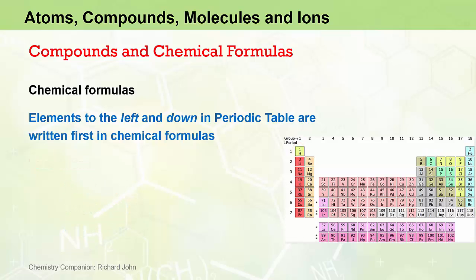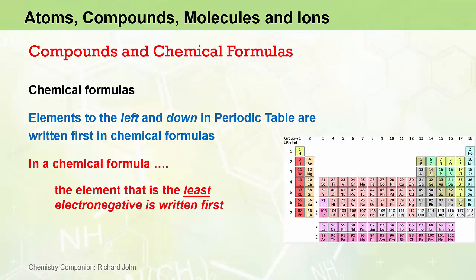Unfortunately, hydrogen seems to be an exception for a lot of rules in chemistry. The actual technical rule is that in a chemical formula, the element that is the least electronegative is written first, and the element that is the most electronegative is written last. And we deal with the concept of electronegativity later in this video series.